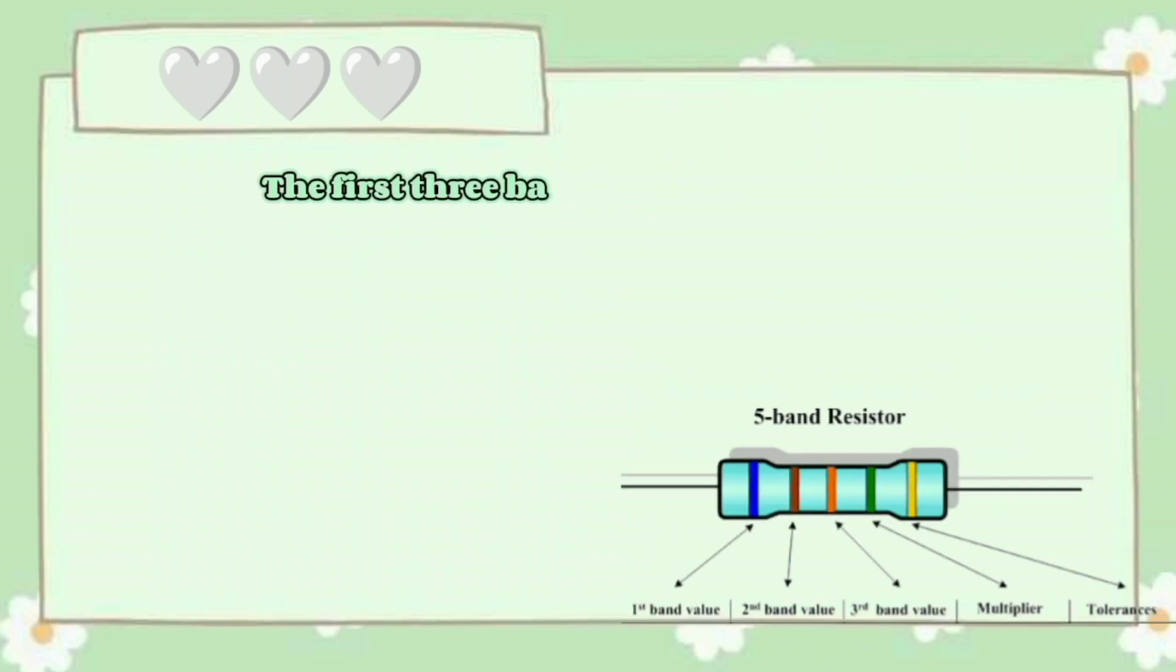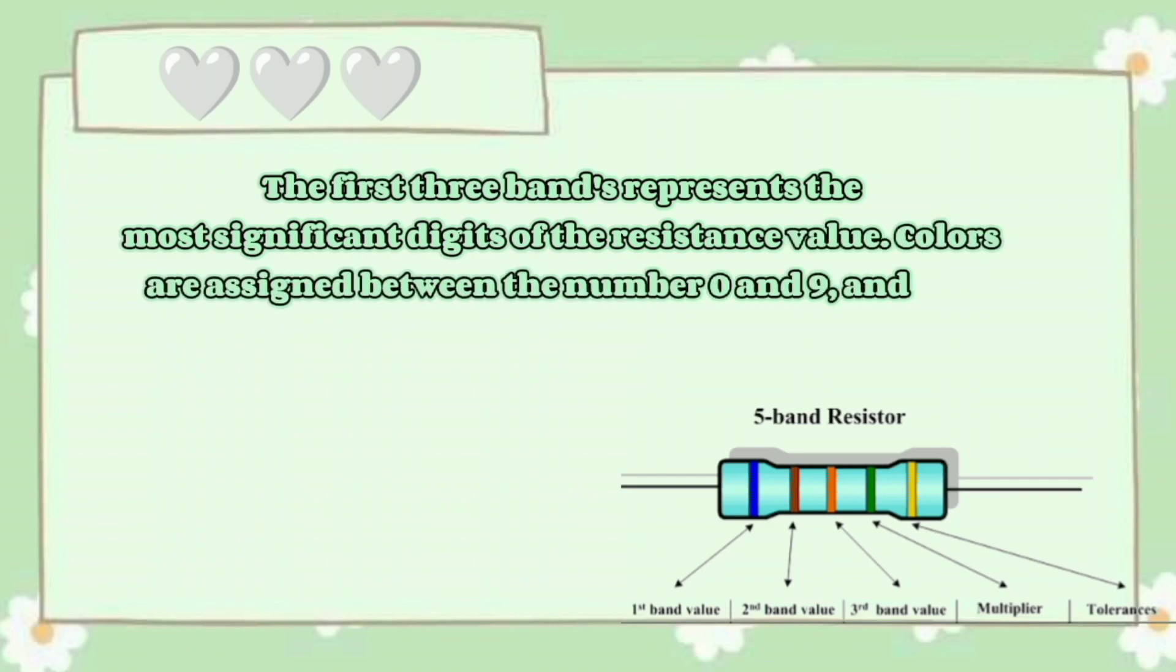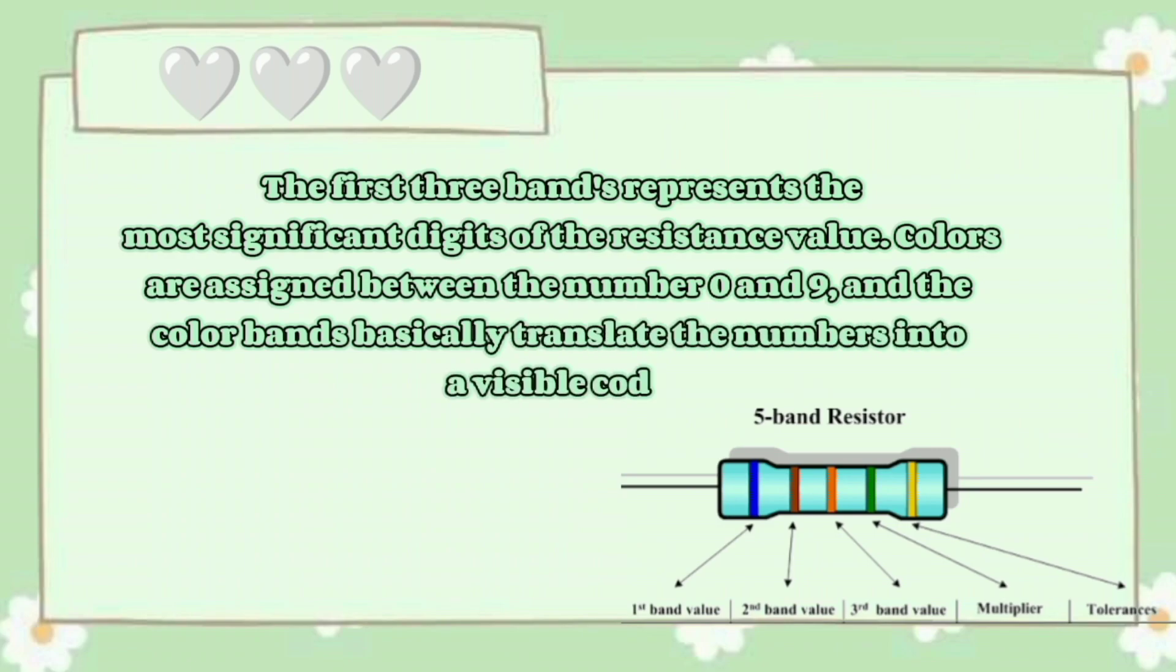The first 3 bands represent the most significant digits of the resistance value. Colors are assigned to the numbers 0 through 9, and the color bands translate numbers into a visible code.